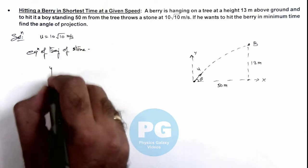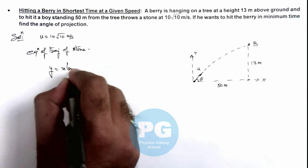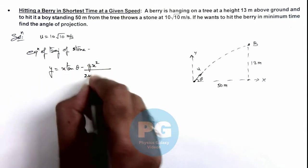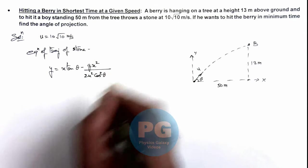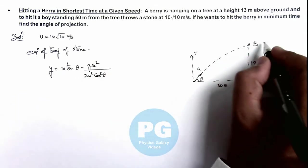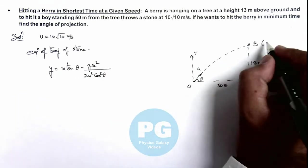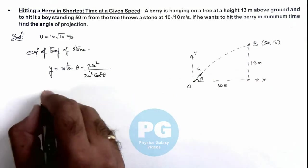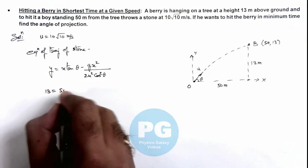Which can be given as y equals x tan theta minus g x squared by 2 u squared cos squared theta. So if we substitute the coordinates of berry with respect to the projection point which are 50, it can be taken as 13 equals 50 tan theta.